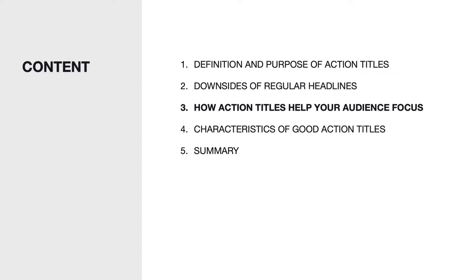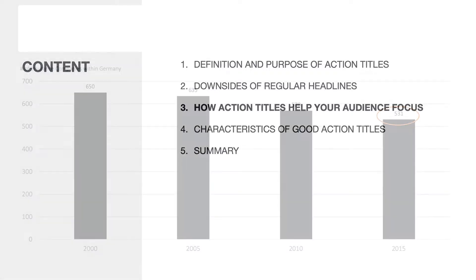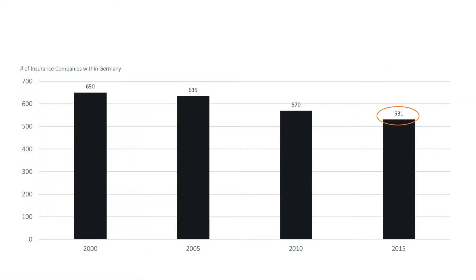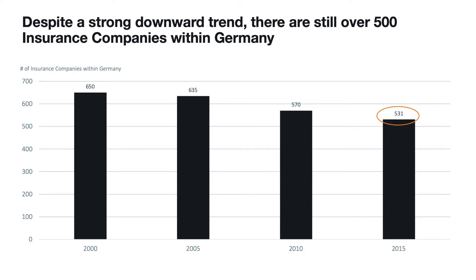Now let me show you the power of action titles. Let's take a look at this example showing how many insurance companies existed throughout the years within Germany. Depending on which message you want to deliver, there are various action titles you may use. For example: 'Despite a strong downward trend, there are still over 500 insurance companies within Germany.' This action title focuses on the number of companies in the year 2015.